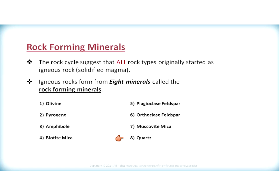These igneous rocks form as a result of these eight minerals crystallizing out of the magma. Four of these minerals make up a composition called mafic. These are generally high-temperature minerals that crystallize out of the magma at very high temperatures, ranging from 800 up to 1200 degrees Celsius. The minerals on the right make up a composition called felsic, and these generally crystallize out of the magma below 800 degrees, down to approximately 600 degrees.